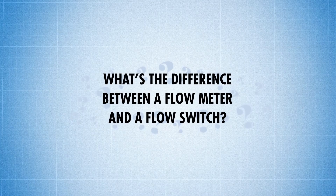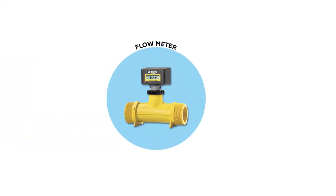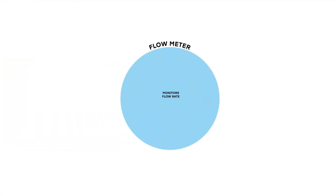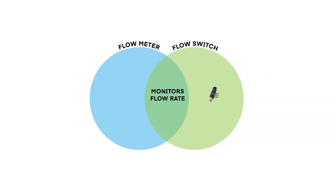So what's the difference between a flow meter and a flow switch? The flow meter can only monitor and in some cases display the rate of flow, while flow switches monitor flow rates and send trip signals to trigger specific actions from machines within the system.